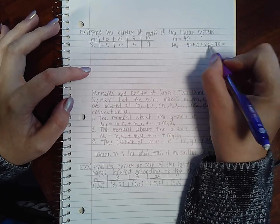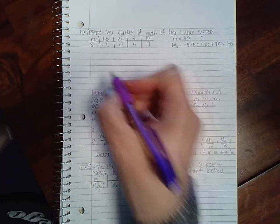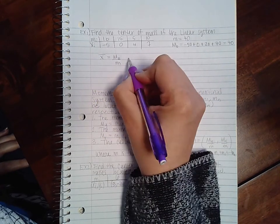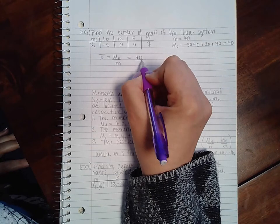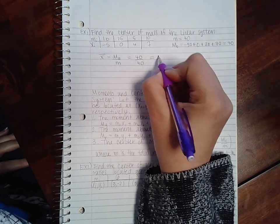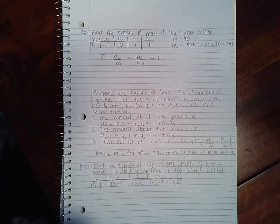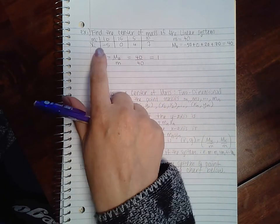That will give me 20 and 20, so I get 40. If I want to find the center of mass, I'm going to take m sub zero over lowercase m, which is 40 over 40, which equals one.